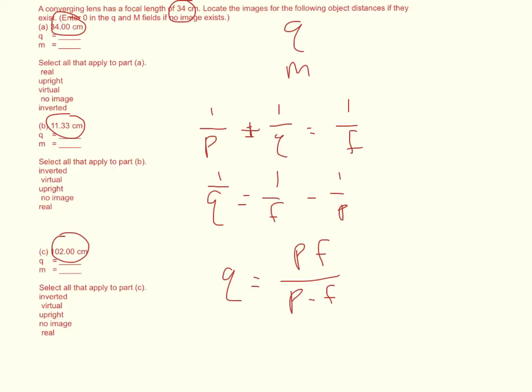Now of course magnification equals negative Q over P. You could do a substitution and say that it's equal to negative PF over P times P minus F. And that would allow you to solve for Q first.